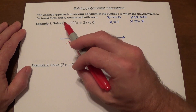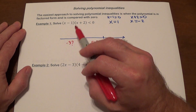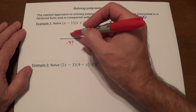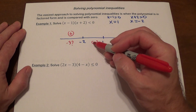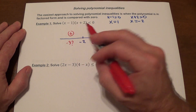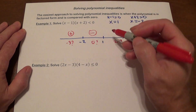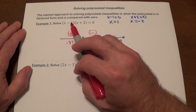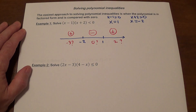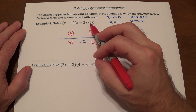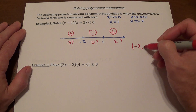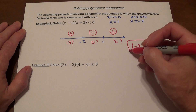When you use negative three: negative three minus one gives negative, negative three plus two gives negative — negative times negative is plus. For zero: zero minus one is negative, zero plus two is positive — negative times positive is negative. For two: two minus one is positive, two plus two is positive — all positive, so positive. We're looking for less than zero, so we're between these two numbers. The answer is from negative two to one.